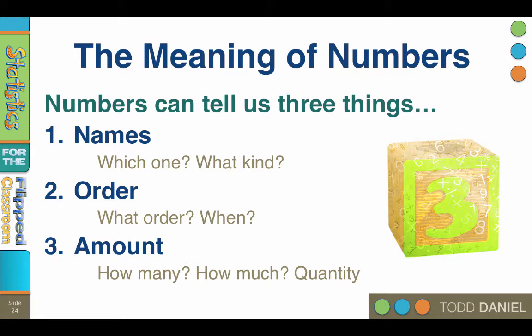And amounts — numbers can tell us how many. How many children do you have? How many pets? How many pictures on your phone? Numbers can tell us how much. How much space do all those pictures take up? These amount numbers quantify the world and can be used for inferential statistics.